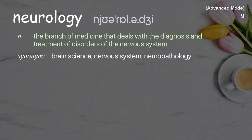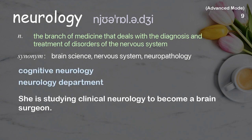Neurology. The branch of medicine that deals with the diagnosis and treatment of disorders of the nervous system. Examples: cognitive neurology, neurology department. She is studying clinical neurology to become a brain surgeon.